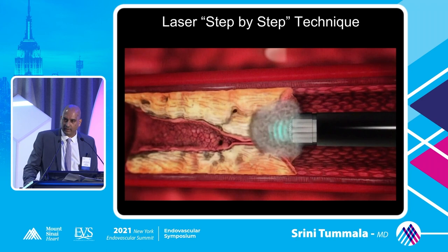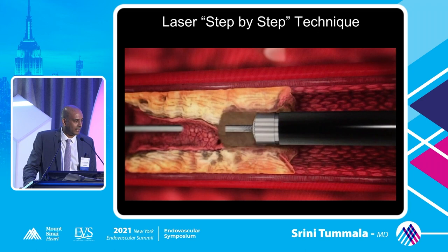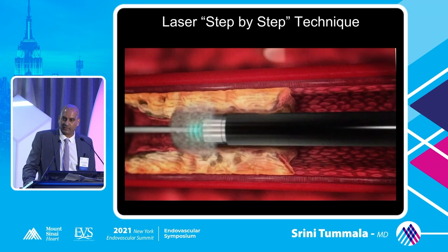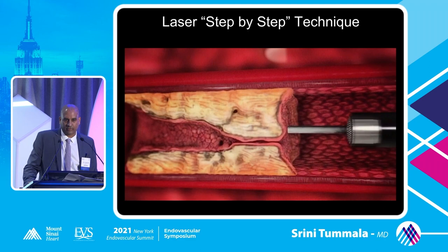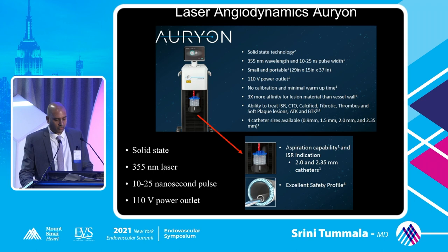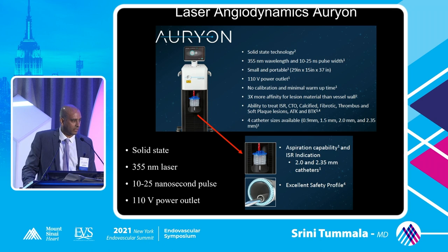There's also laser — two companies make laser systems. The step-by-step technique is described but considered off-label: advance a guide wire to the cap, vaporize with laser, then advance step-by-step through the CTO. We're more familiar with laser for ISR and atherectomy. The newest is the Angiodynamics laser, a solid-state technology at a higher wavelength of 355 nanometers with a shorter pulse width — meaning it apparently works better in calcium, though that needs more data.